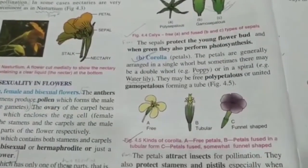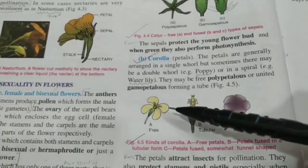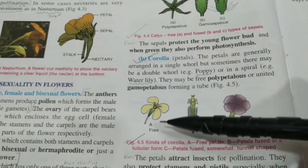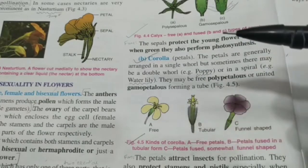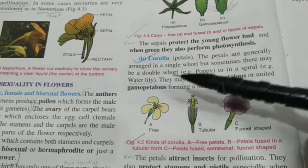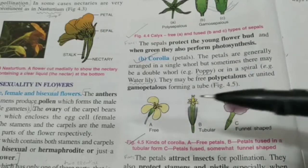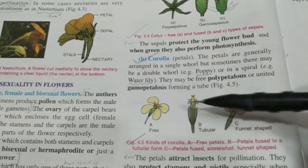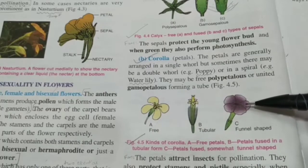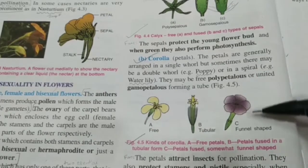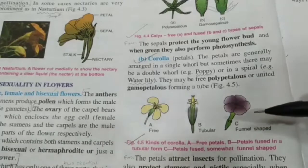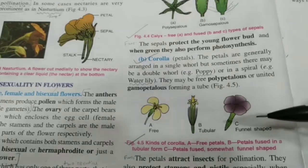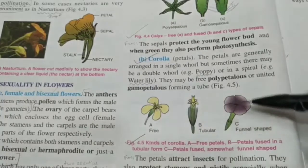Next, let's talk about the corolla. It has petals and generally forms one whorl, but there may be double whorls — just as we had calyx and epicalyx in hibiscus. A double-whorl example would be poppy flowers, and there may also be a spiraling whorl, as in water lily. When the petals are free, they are called polypetalous; when fused, it is called gamopetalous. The function of petals is to attract insects for pollination. However, flowers that don't depend on insect pollination have small and dull-colored petals. Petals also protect the stamens and pistils, especially when they form a tube.